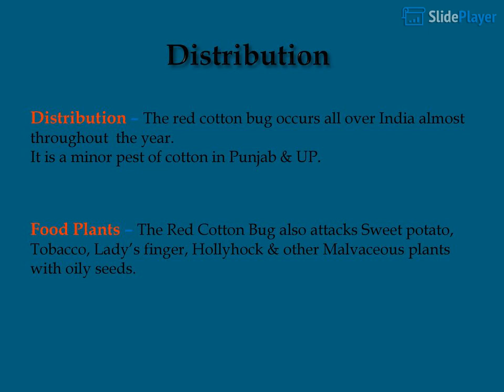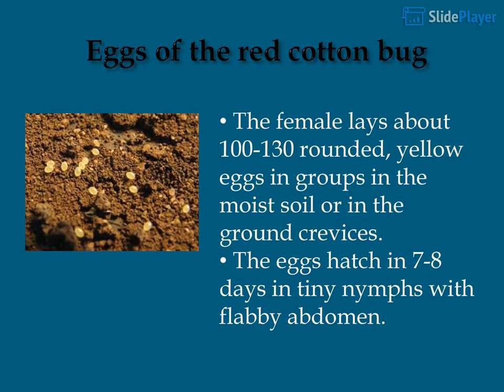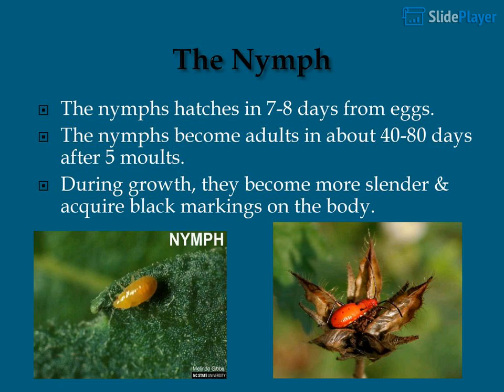The red cotton bug also attacks sweet potato, tobacco, lady's finger, hollyhock, and other malvaceous plants with oily seeds. The female lays about 100 to 130 rounded, yellow eggs in groups in moist soil or ground crevices. The eggs hatch in 7 to 8 days into tiny nymphs with flabby abdomens. Nymphs become adults in about 40 to 80 days after 5 molts, becoming more slender and acquiring black markings on the body.